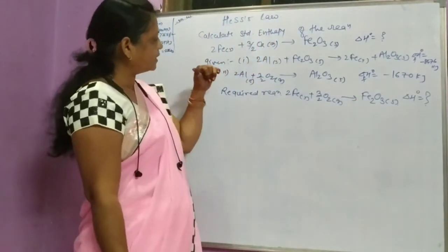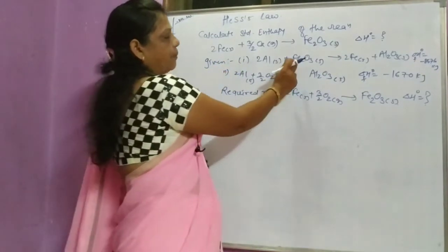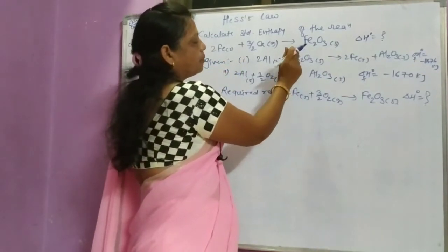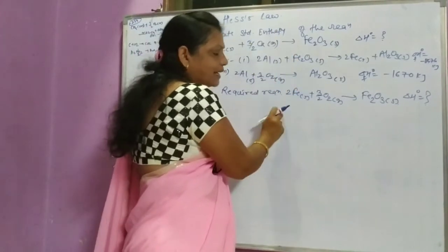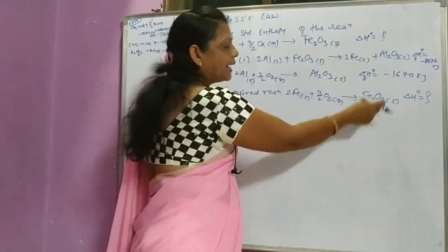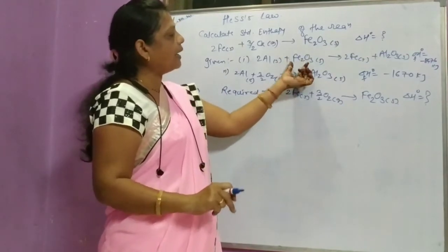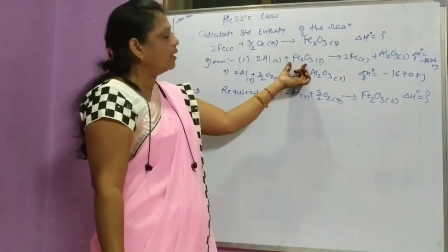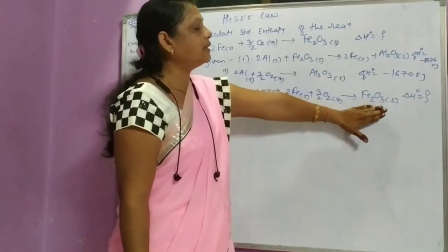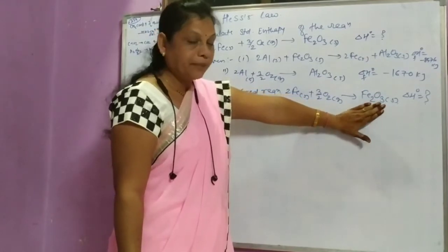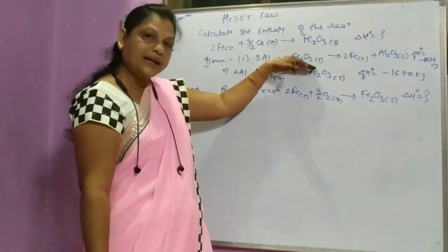For this reaction, we look at reaction number 1 and reaction number 2. Here, Fe2O3 is present on the reaction side — at the left-hand side. But in the required equation, Fe2O3 is needed on the right-hand side, the product side. One equation has it on the given data reaction side.